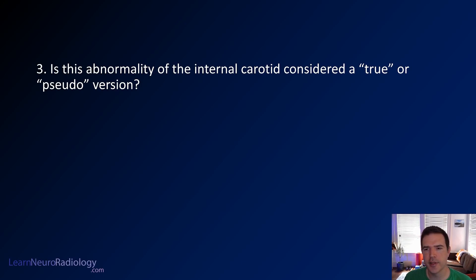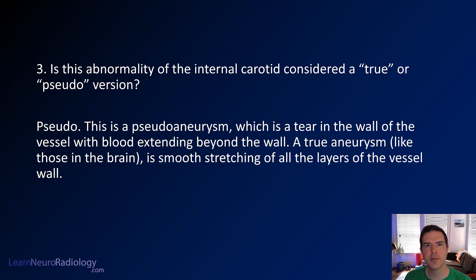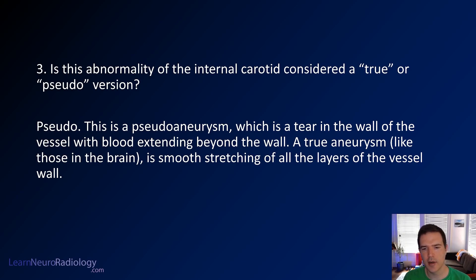Our third question: is this abnormality of the internal carotid artery a true or pseudo aneurysm? In the neck, most commonly these aneurysms have one or more vessel layers damaged — such as the intima — with a little tear in the wall. Blood extends beyond the intima, making it a pseudoaneurysm: essentially a contained rupture without smooth dilation of the vessel walls. Aneurysms in the brain are most commonly true aneurysms — they contain all wall layers with the vessel wall smoothly expanded gradually over time or a stretching of all those layers. So in the neck, we have pseudoaneurysms.